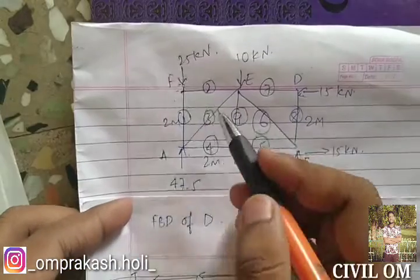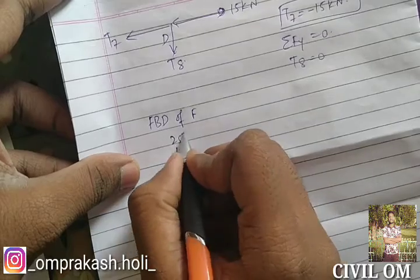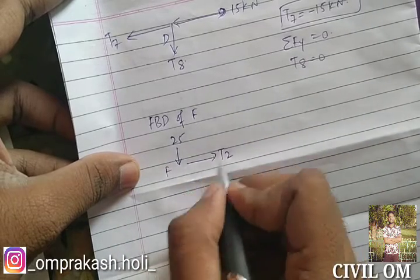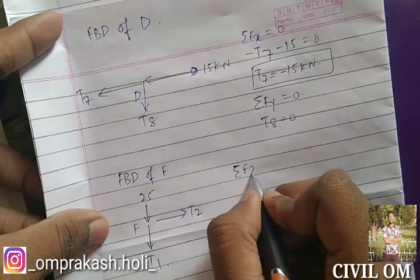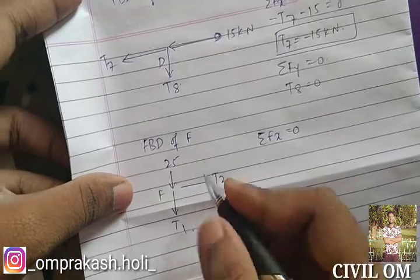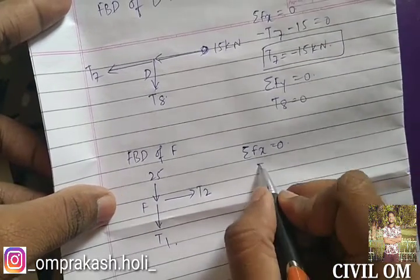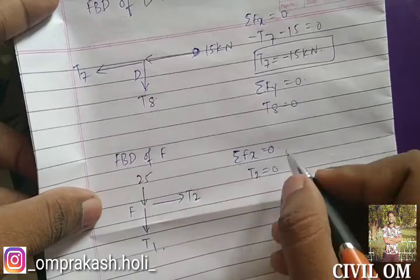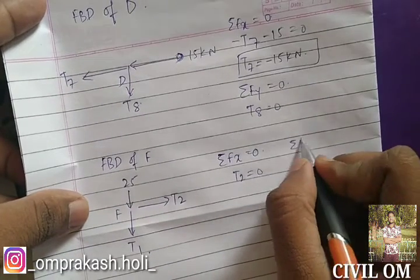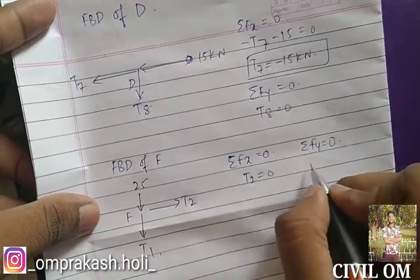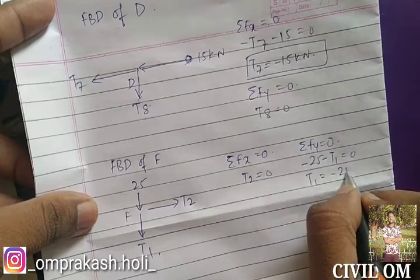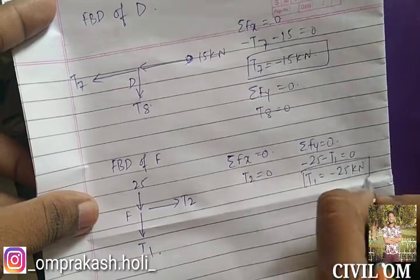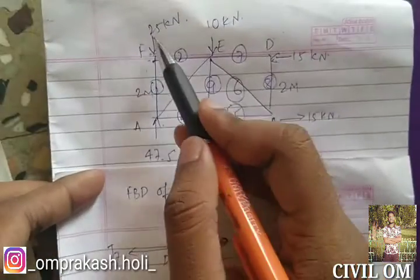Now the free body diagram of point F. We have 25 kN, T2, and T1. Considering sigma FX equal to 0: T2 equals 0. Considering summation of FY equal to 0: minus 25 minus T1 equal to 0, so T1 equals minus 25 kilonewton.